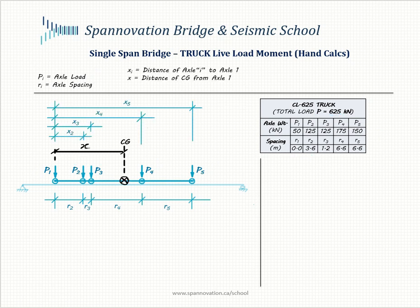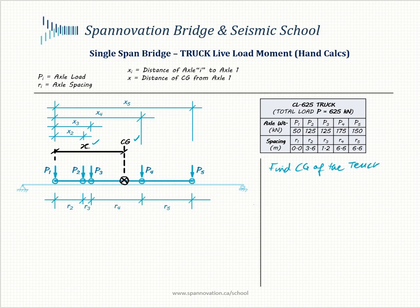The first thing we want to do is determine the center of gravity of the truck. The CG sits at a distance X from the first axle P1. I need to locate the distance of the CG from the start of the truck using the distances X2 through X5, which are functions of the axle spacings and give the location of each axle relative to P1.